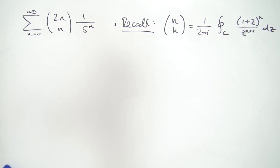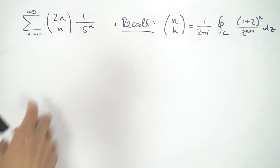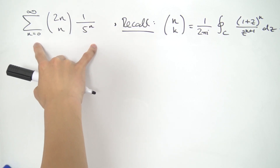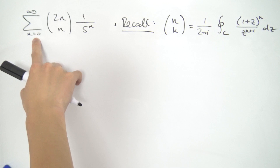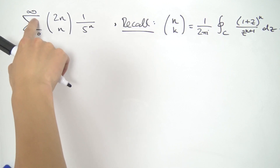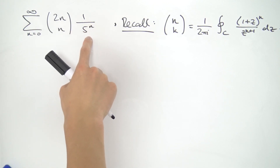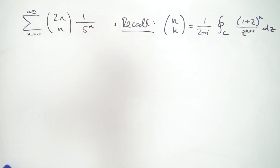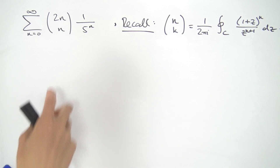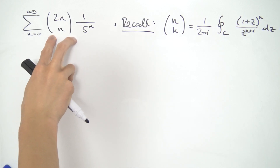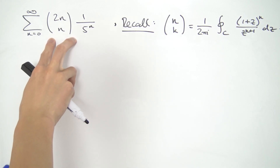Greetings everybody. Today we're going to be evaluating this infinite series: the sum running from n equals 0 to infinity of 2n choose n times 1 over 5 to the n. Taking a look at this for the first time, it might look like a bit of a funny sum to evaluate, because in particular we have this 2n choose n in here.